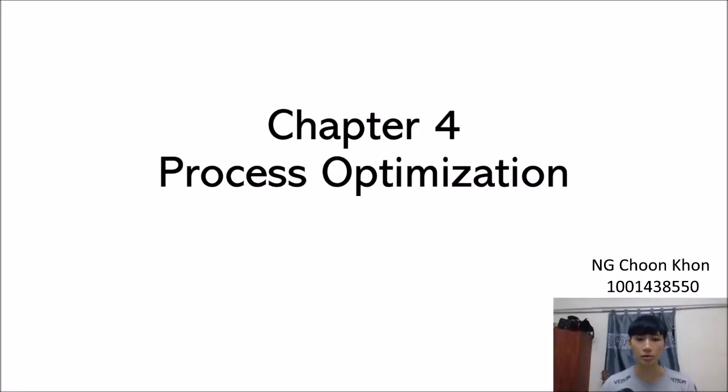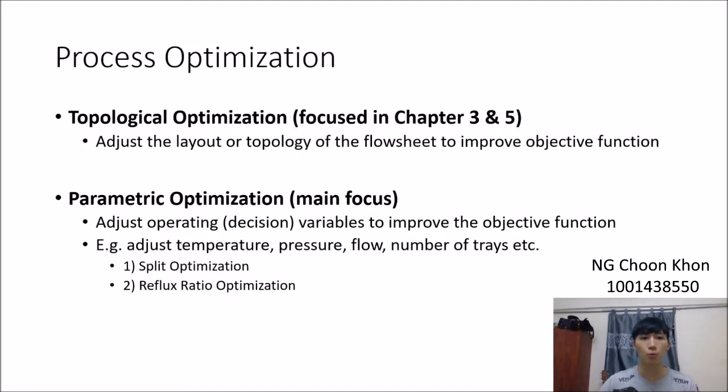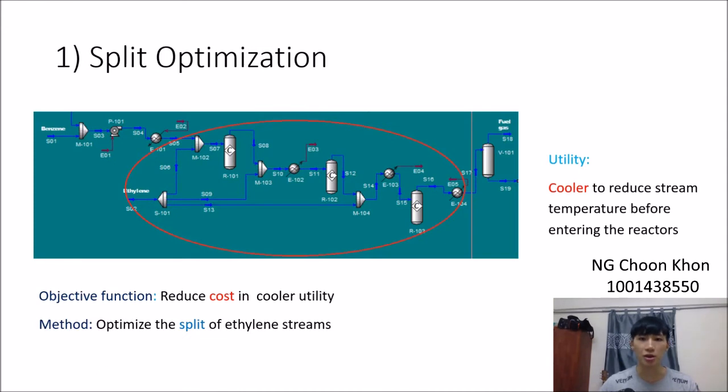Hello everyone. My name is Eng Chun Kong. I will present chapter 4 for process optimization. For process optimization, there are generally two parts: topological optimization and parametric optimization. Parametric optimization adjusts operating variables to improve operating functions. The operating variables could be temperature, pressure, flow, or number of trays. In this chapter, there are two parts we're focusing on: split optimization and reflux ratio optimization.